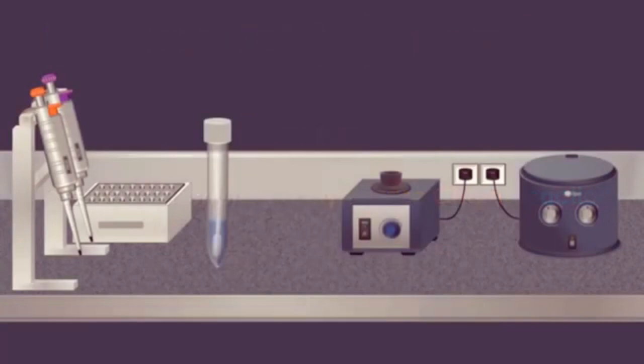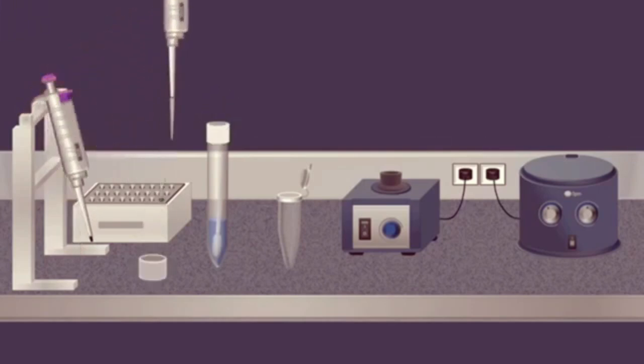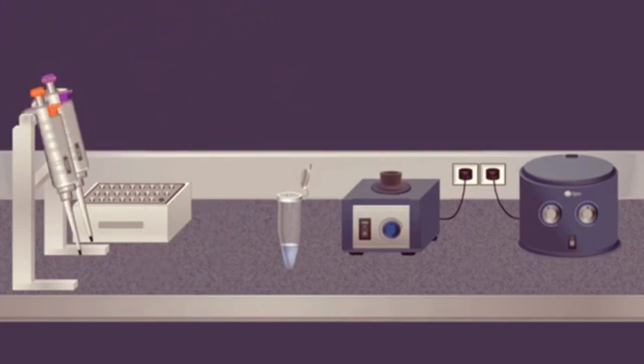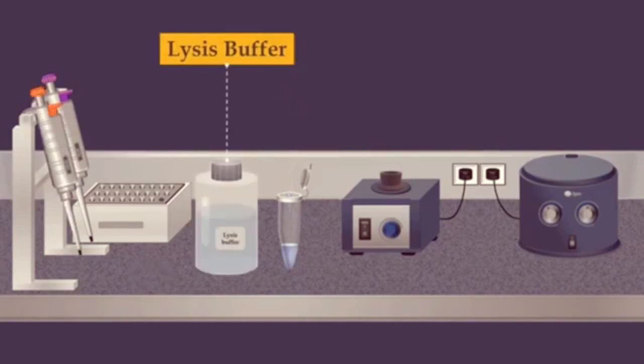To perform this method, basically viral RNA should be extracted. Several RNA purification kits are available for convenient, fast and effective isolation. To extract the viral RNA by using commercial kit, the sample is first added into a microcentrifuge tube. Then it is mixed with a lysis buffer.